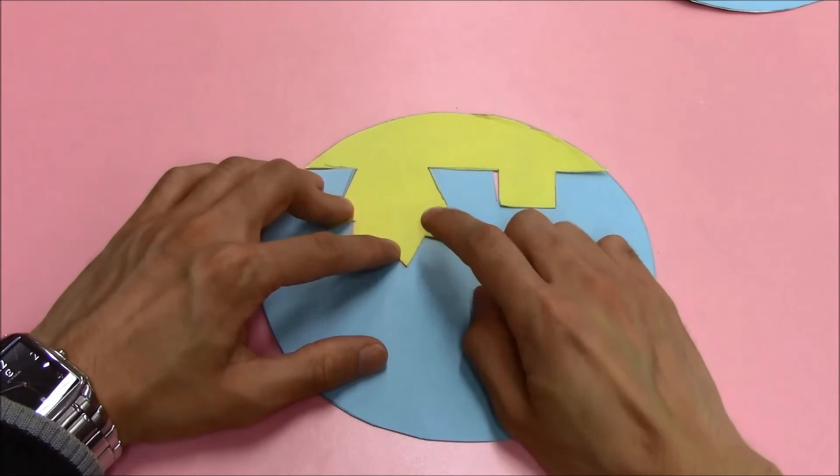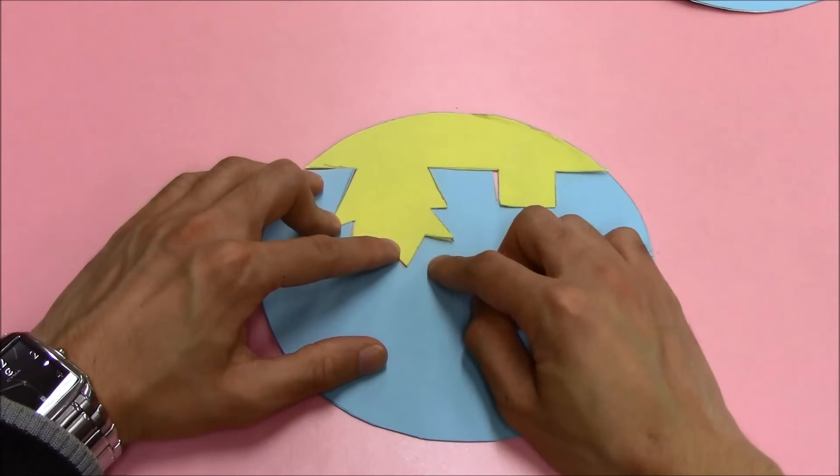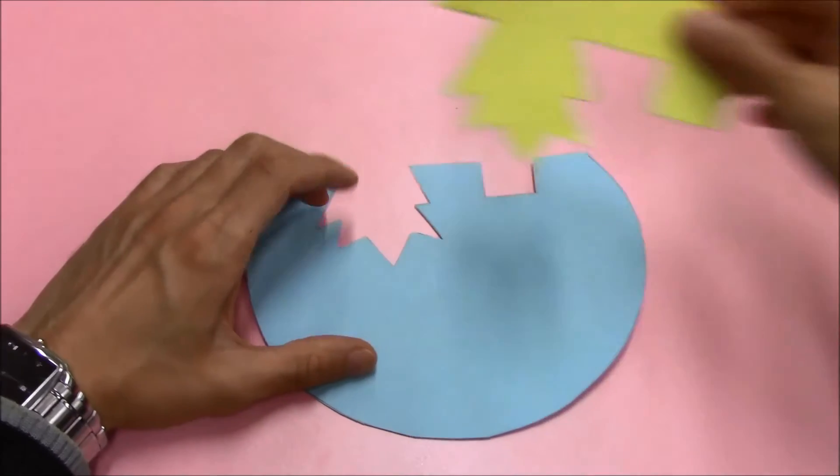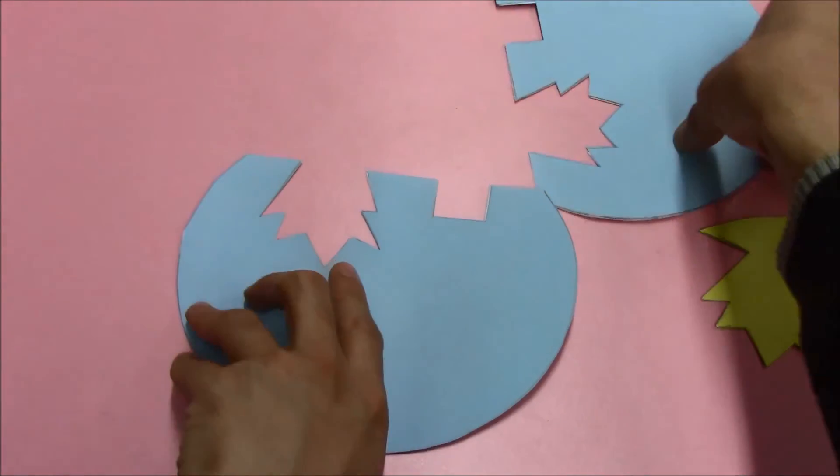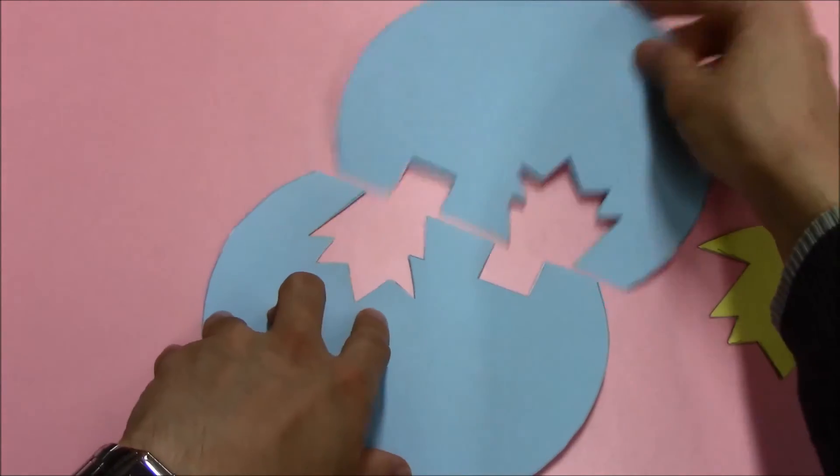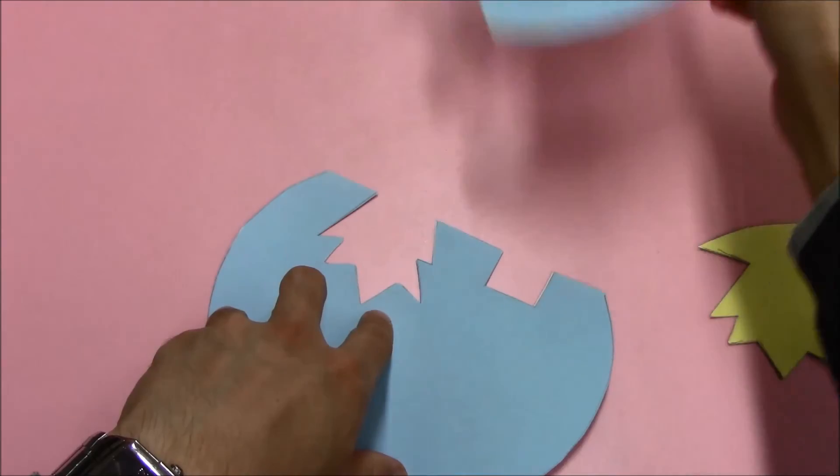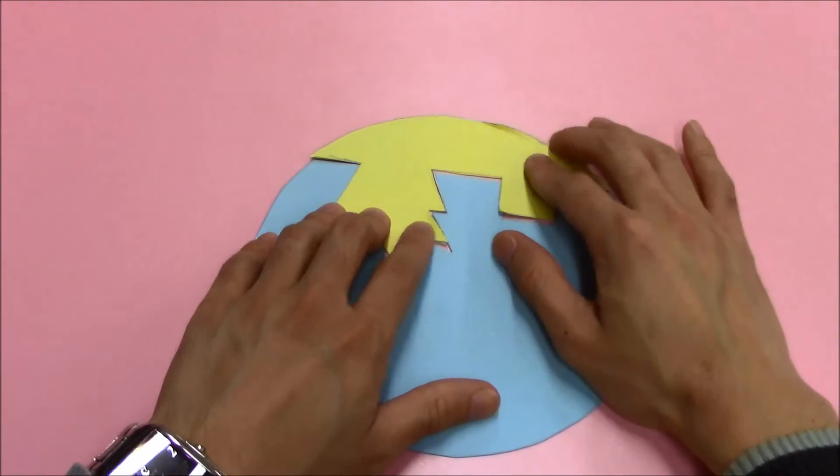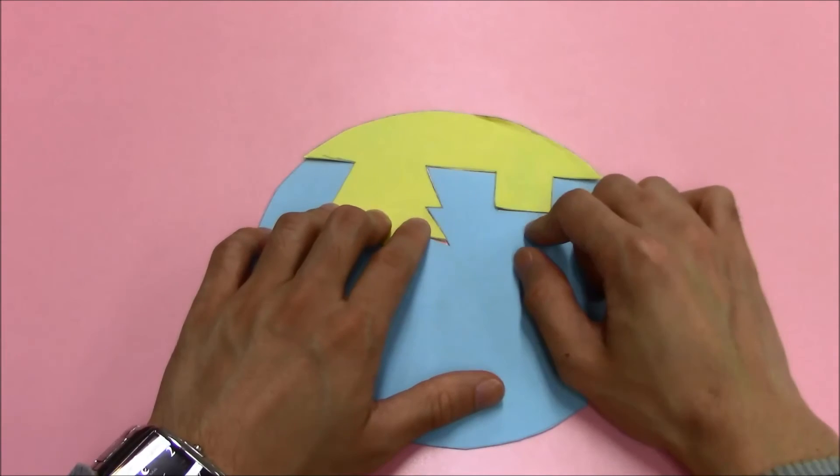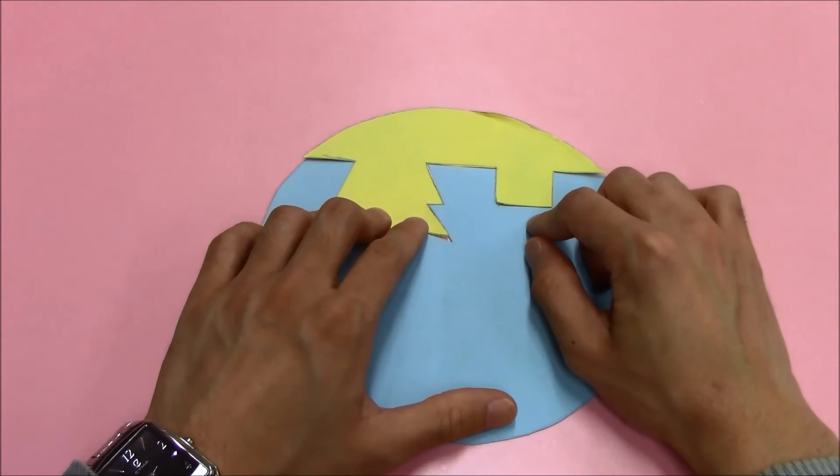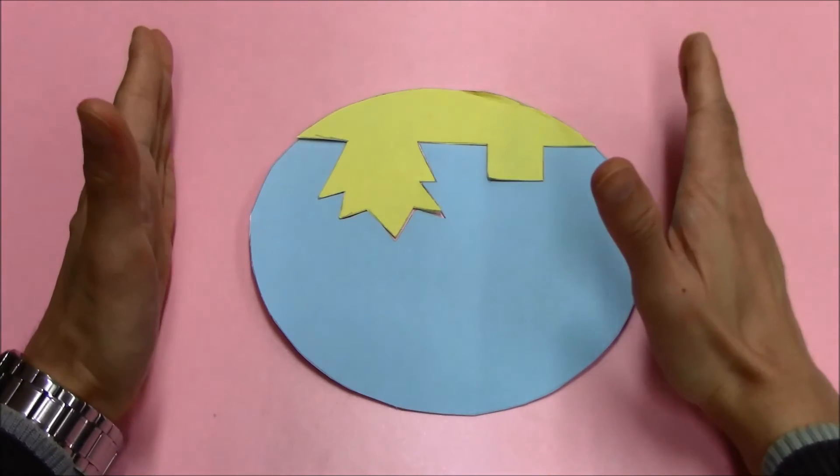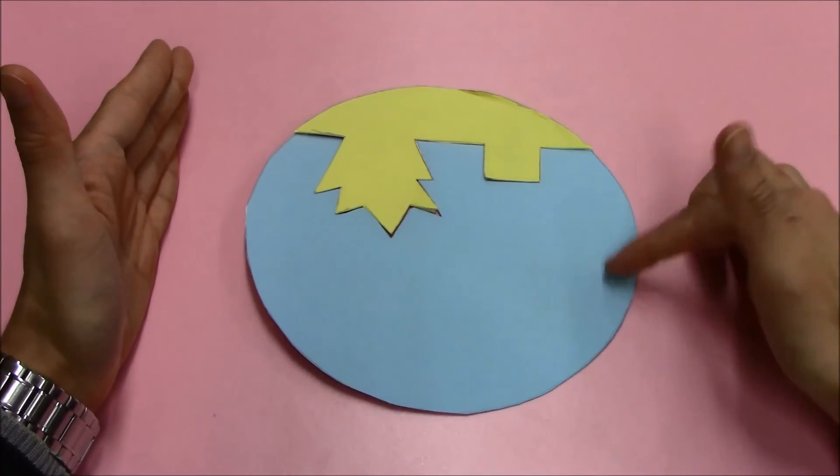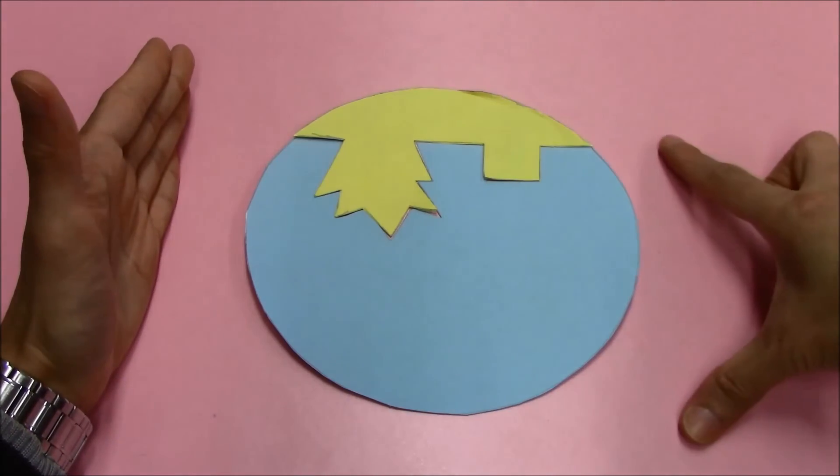We use the word fit, rather than the same. Because if the active site and substrate are the same, they cannot combine together. But for the substrate, its shape fits the shape of the active site in the enzyme molecule. So they can combine together and form an enzyme-substrate complex.